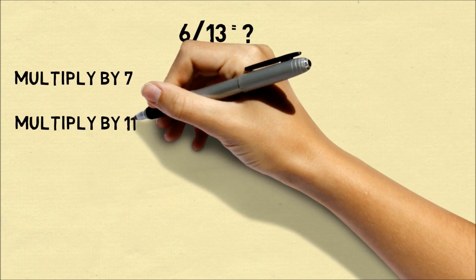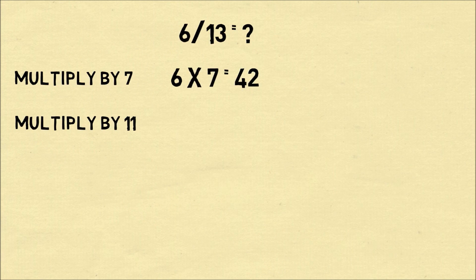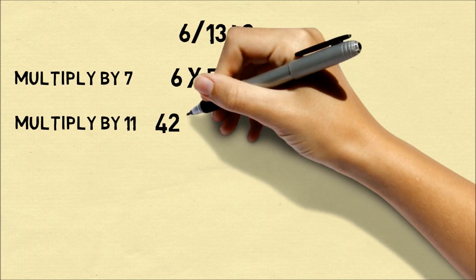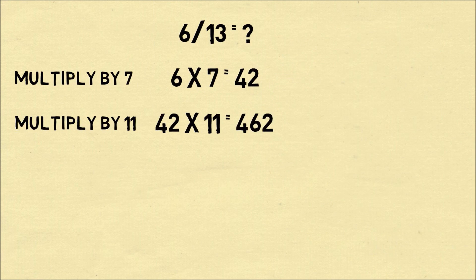The next step is to take the result and further multiply it by 11. So we take 42 multiplied by 11 and that's 462.